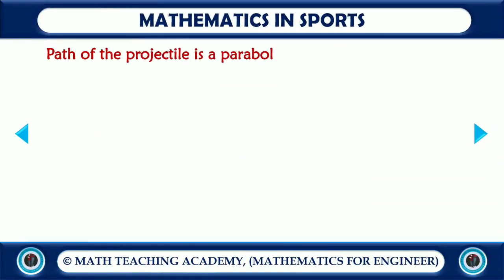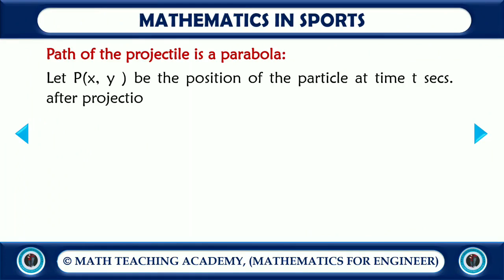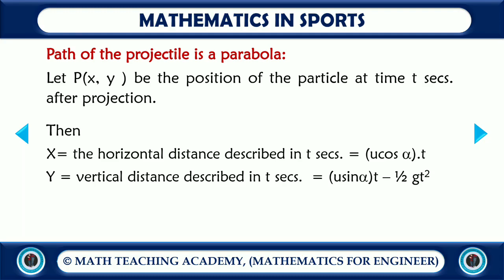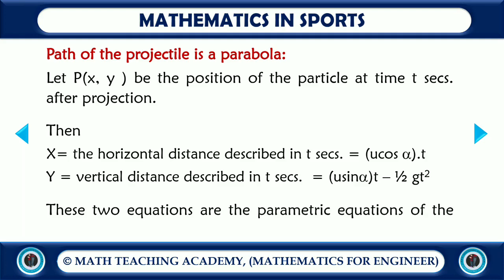The path of the projectile is a parabola. Let P(x, y) be the position of the particle at time t seconds after projection. Then x equals the horizontal distance described in t seconds = u·cos(α)·t, and y equals the vertical distance described in t seconds = u·sin(α)·t − ½gt². The horizontal distance helps us find the length of the ball traveled (length of four or six), and the vertical distance helps us find the height of the six. These two equations are the parametric equations of the trajectory.